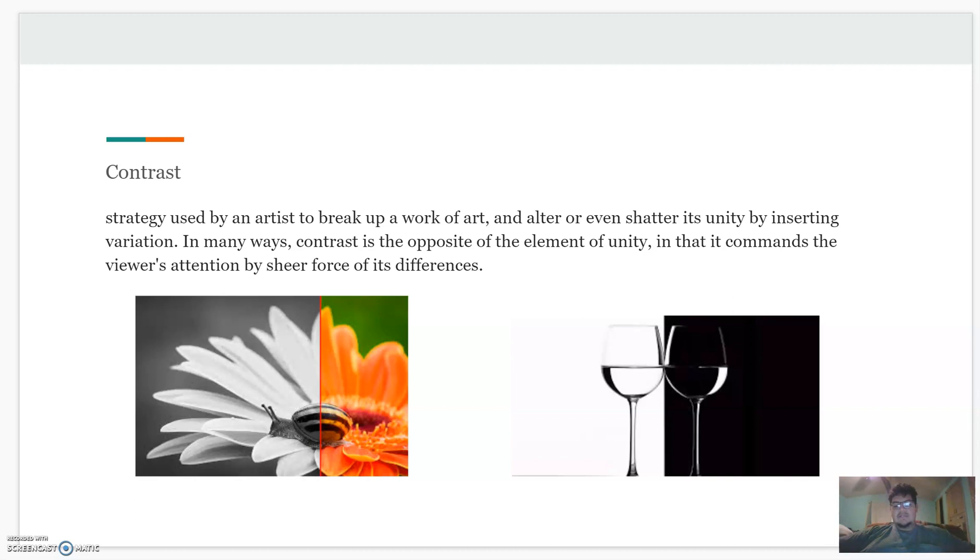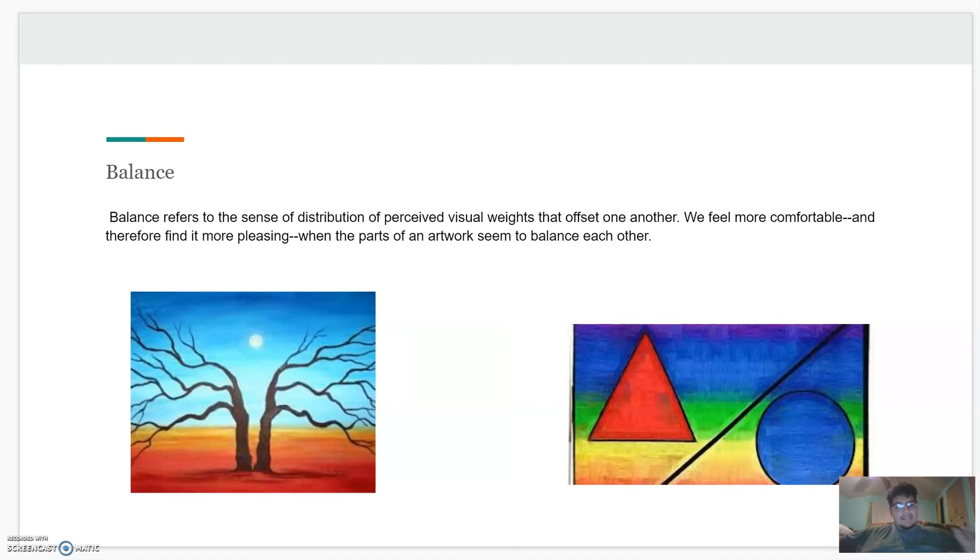This next one I like, it's balance. Balance refers to the sense of distribution of perceived visual weight that offset one another. Basically, we feel more comfortable because the branches are leaning this way. If you separate this, the picture is balanced.